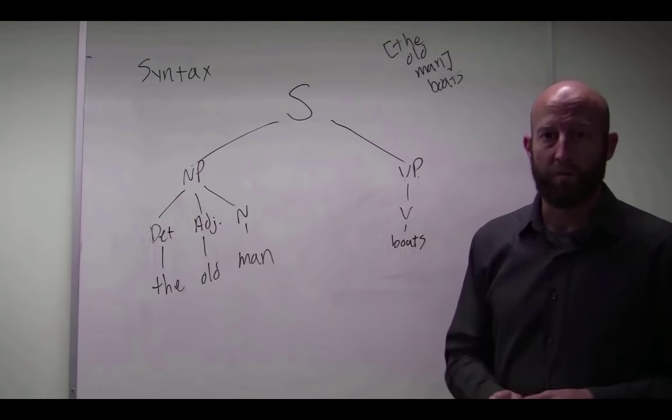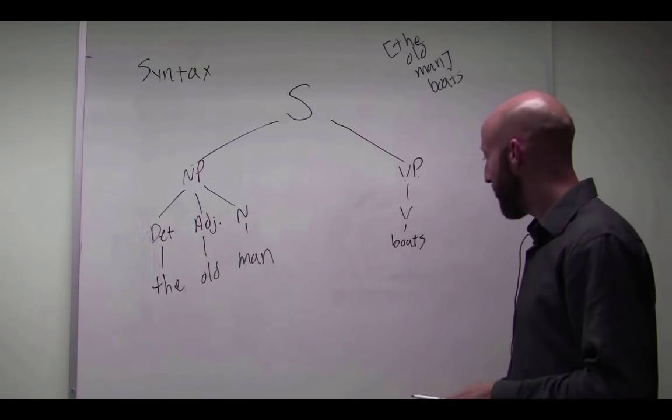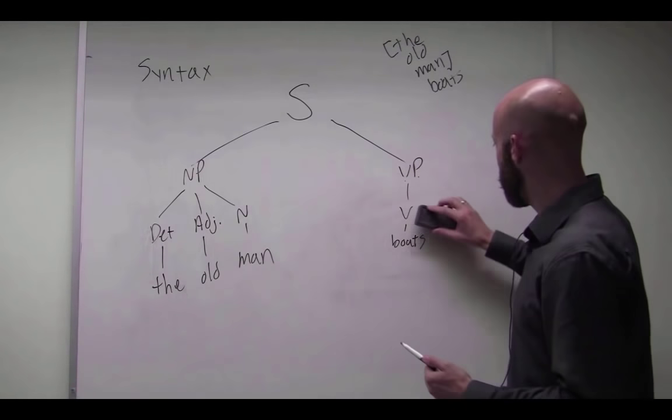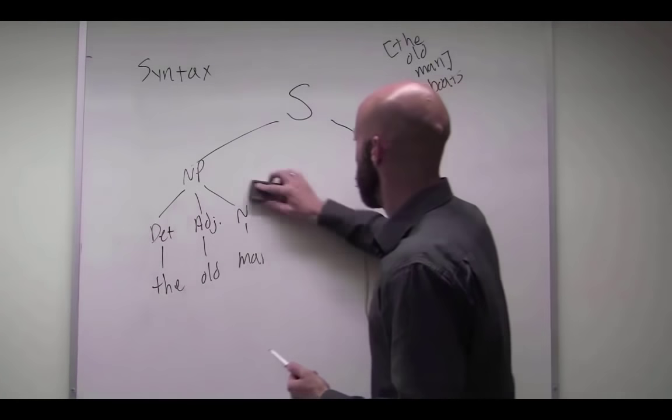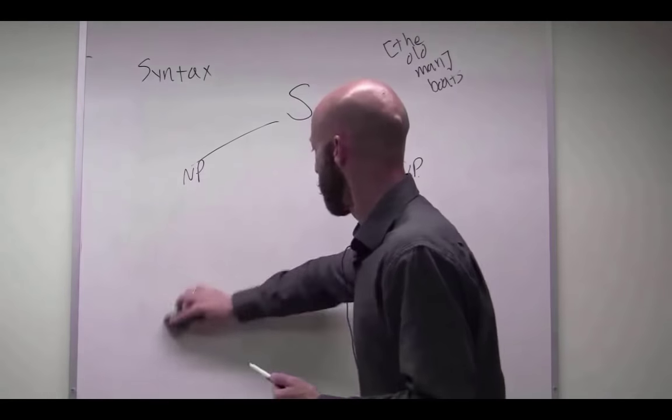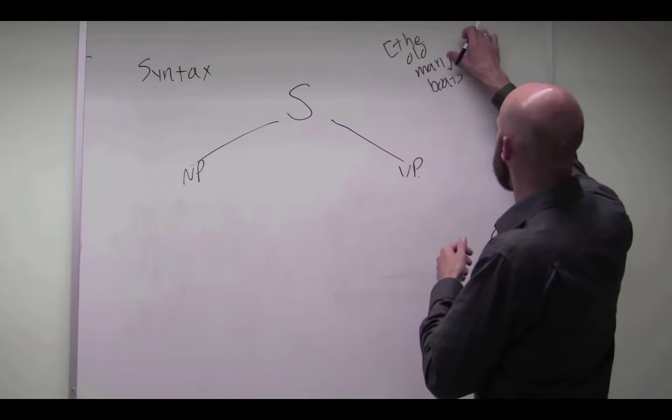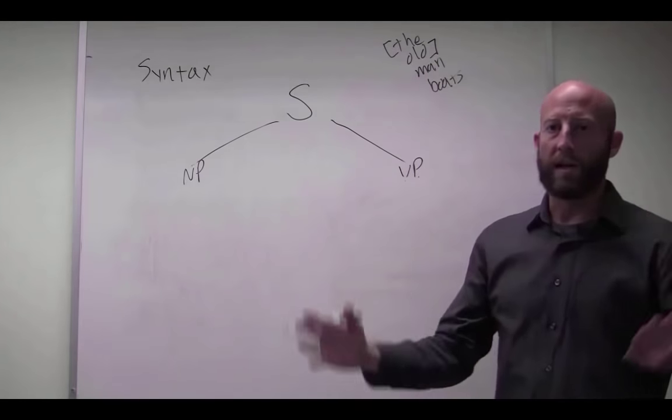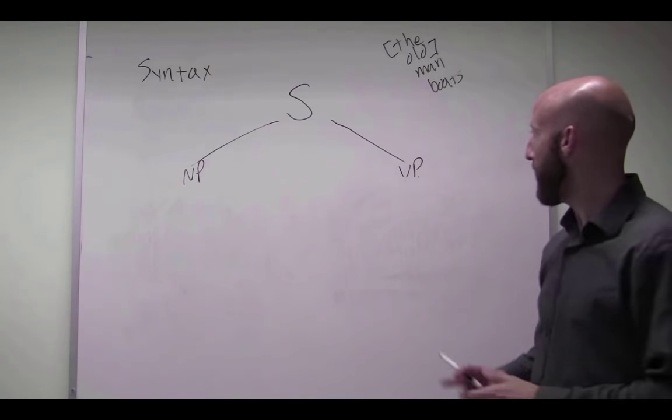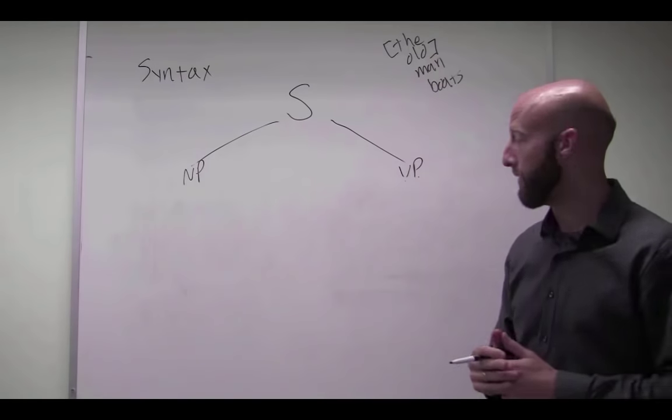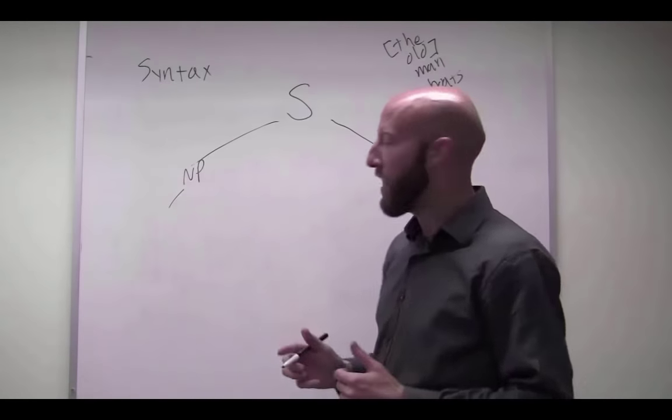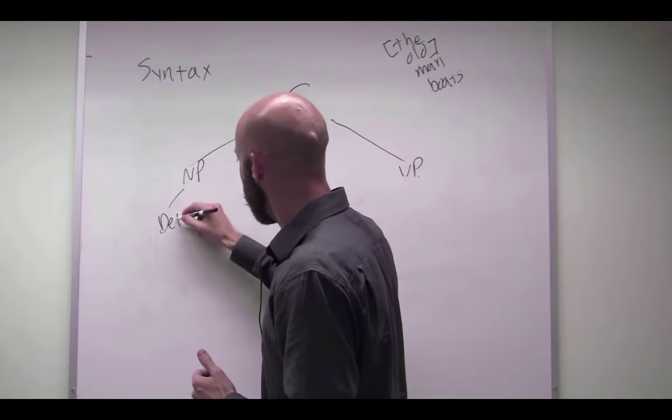So that's one possible meaning of this garden path sentence, but there is another totally different structural representation to represent the other possible meaning. So if we were taking instead this as the constituents, the old as a collection of a group of people as one meaning, and man here is the verb, we've got to draw this as a different tree structure. So still pretty similar kind of noun phrase here. We have the determiner,